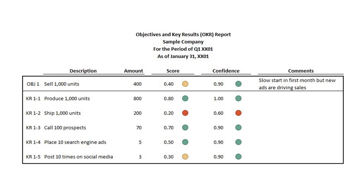Others assign a score to the objective that's not a simple calculation from key results. The second sheet is the actual report that you can review and distribute to others. It has colored circles to quickly identify the status of both the current score and the confidence that key results will be achieved. Comments allow people responsible for the metric to communicate key information to leaders. The report sheet is automatically updated with data from the entry sheet via formulas, and in the Excel version I protected the report sheet to reduce the possibility of those formulas being overwritten — an example of reducing errors through good spreadsheet design.